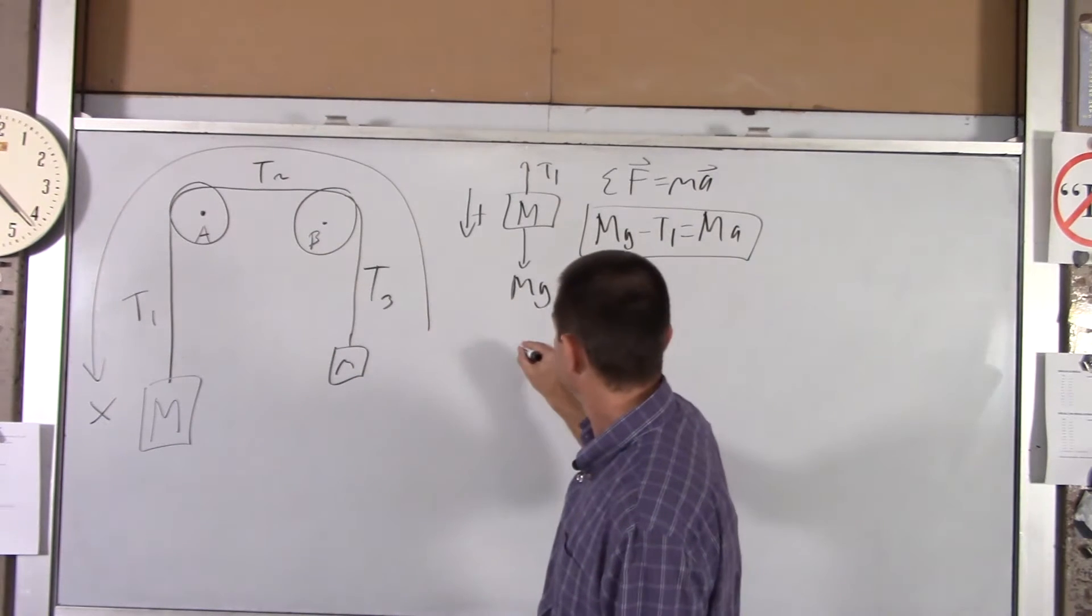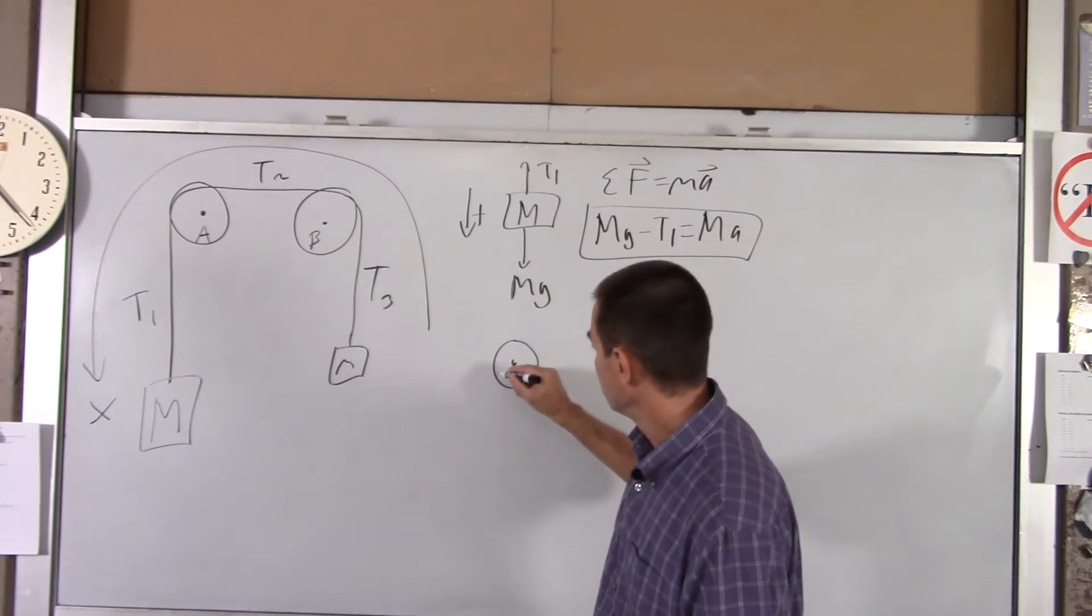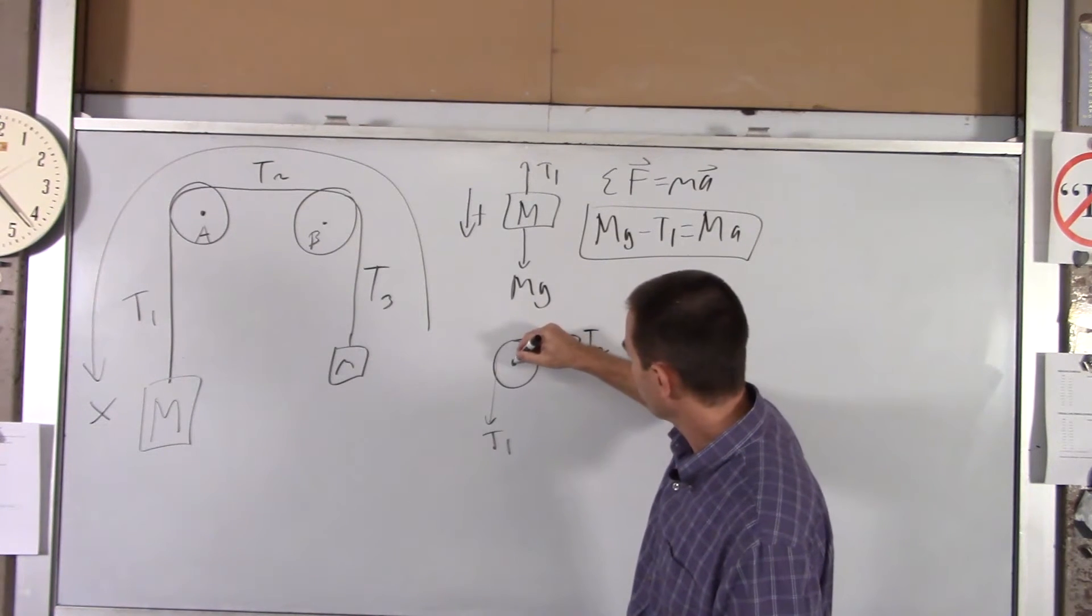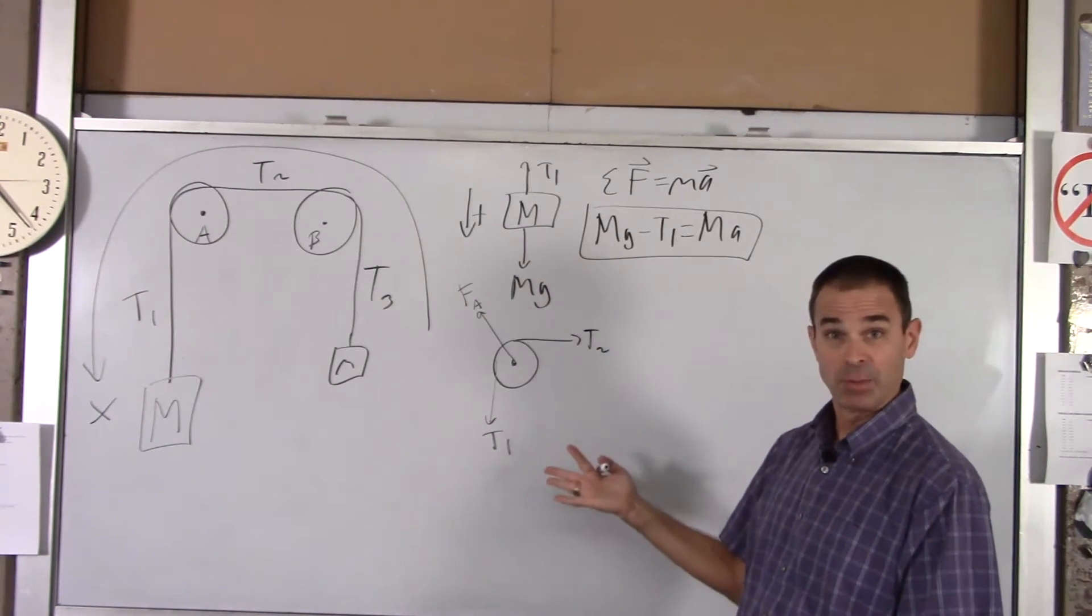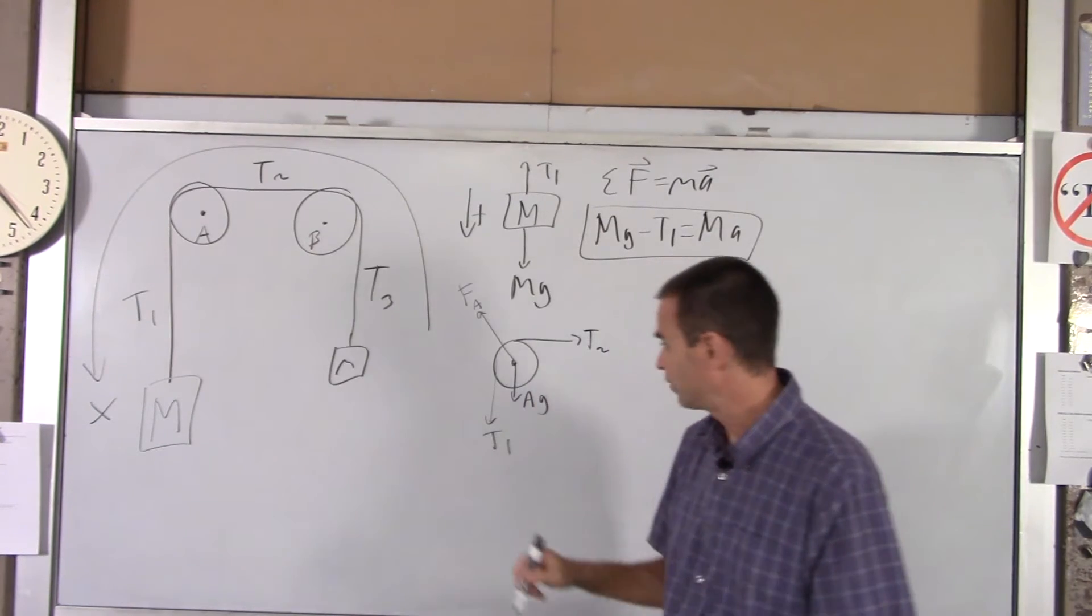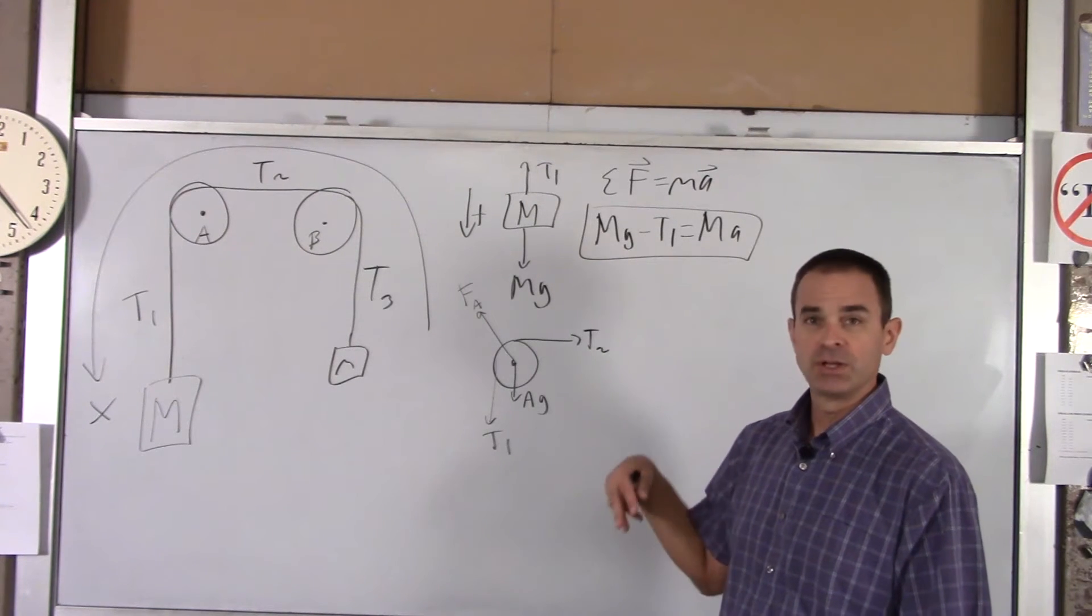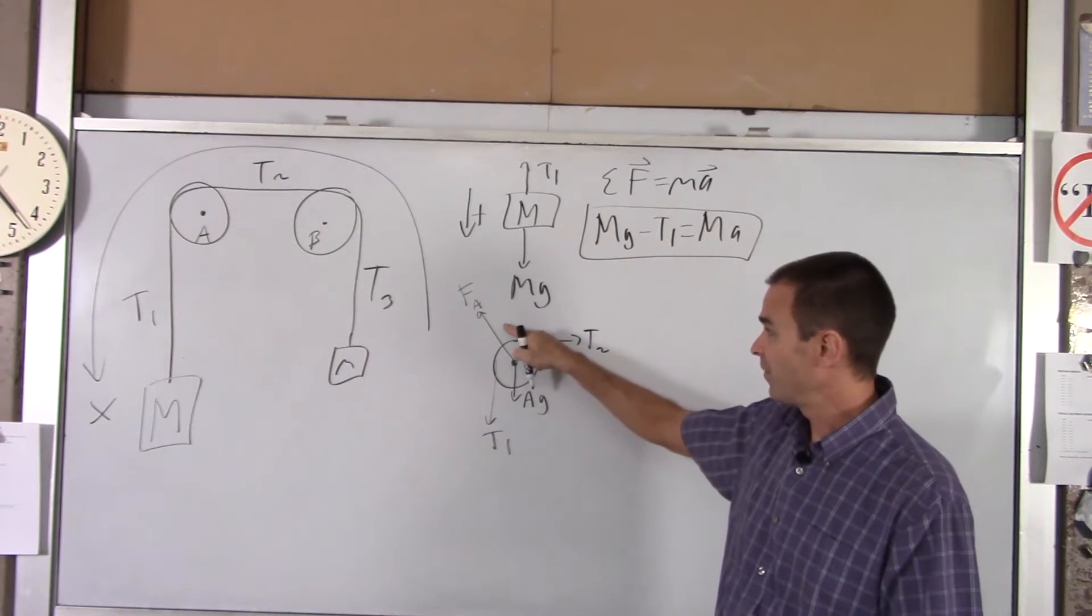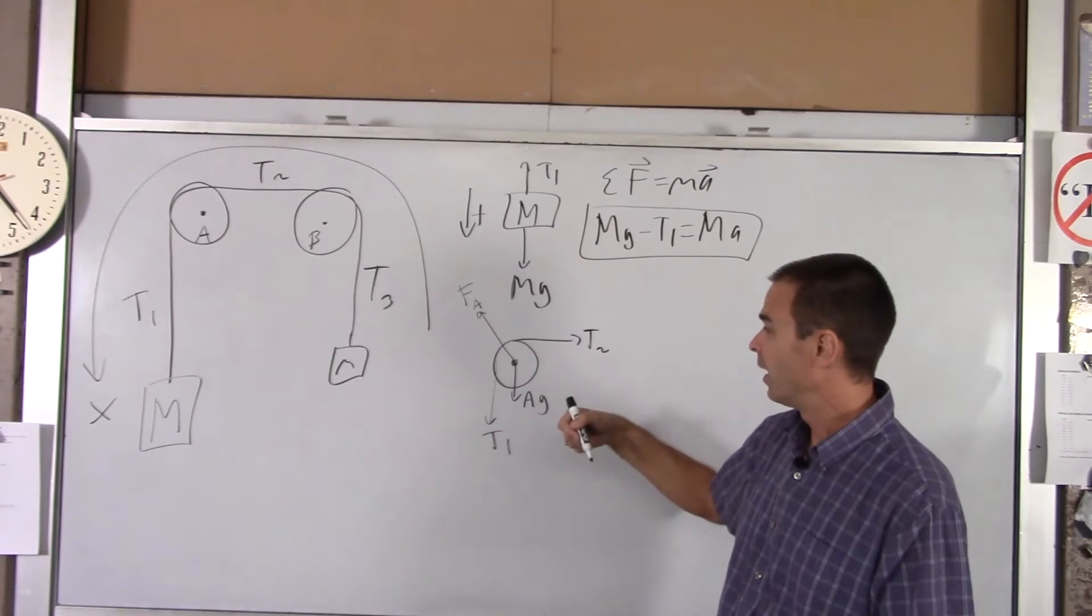Now we'll look at pulley A. The forces acting on him are T1, T2, and then there'll be a force supporting the pulley. I'll call that FA. We also have the weight of the pulley, which would be AG. The only two forces causing torque about the center of the pulley are T1 and T2. FA and AG, they both act through the center of the pulley, so they have a zero lever arm. They cause no torque.